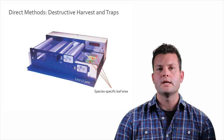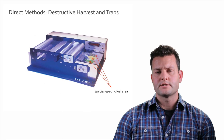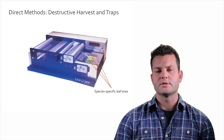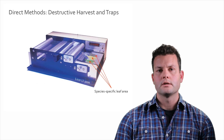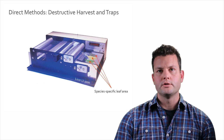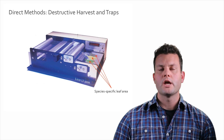One unique thing about this direct method is that it allows species-specific leaf area index. In mixed-species canopies, if we're interested in understanding each species' contribution to total canopy LAI, we can harvest species A, B, and C separately and analyze their leaf area independently using a scanner.